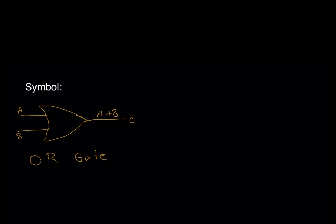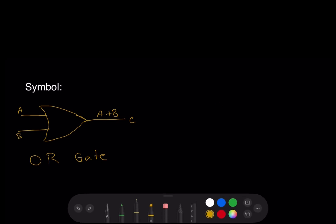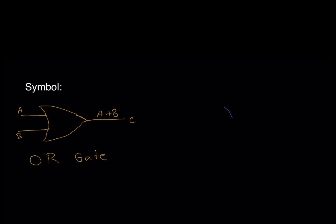That inverted bubble makes it a NOR gate. So this will become an inverted A plus B — what was the OR gate output is now inverted. That bar means it's inverted. We get output C. This symbol with the bubble is the same as adding an inverter to the OR gate output.